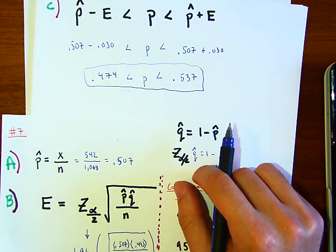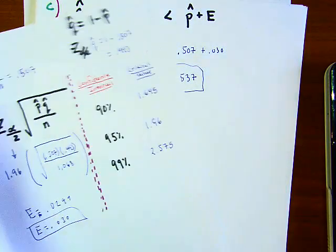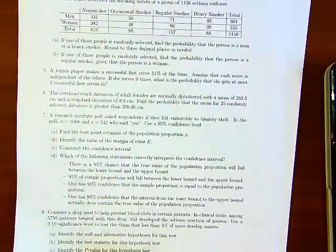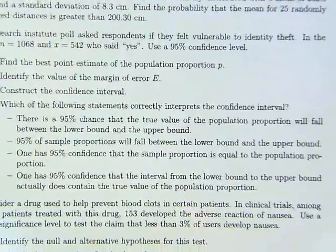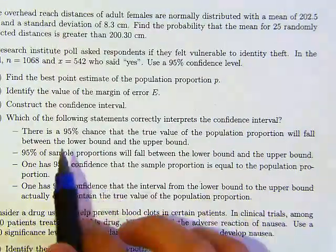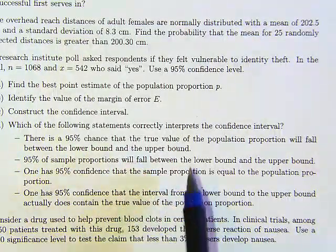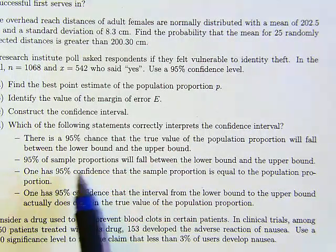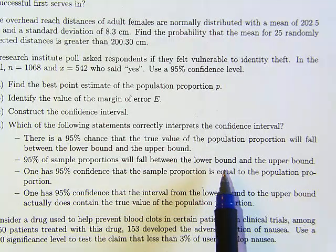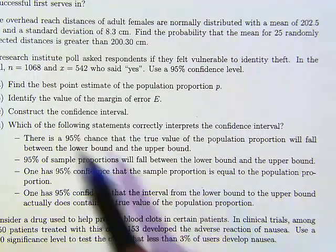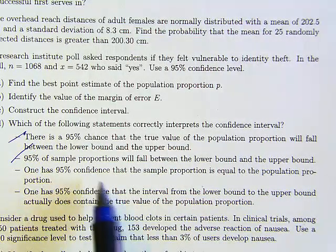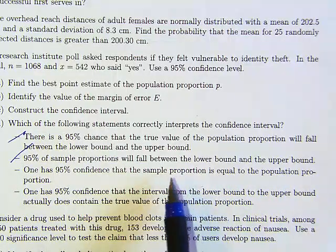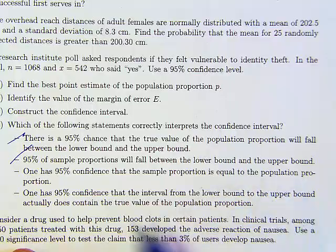Let's look at the next part, letter D. It's saying which of the following statements correctly interprets the confidence interval? Let's see which one would it be. There is a 95% chance that the true value of the population will fall between the lower bound and the upper bound - that's not right. 95% of the sample proportions will fall between the lower bound and the upper bound - no, definitely not these two. One has a 95% confidence that the sample proportion is equal to the population proportion - that is not true. The sample proportion is not equal to the population proportion.